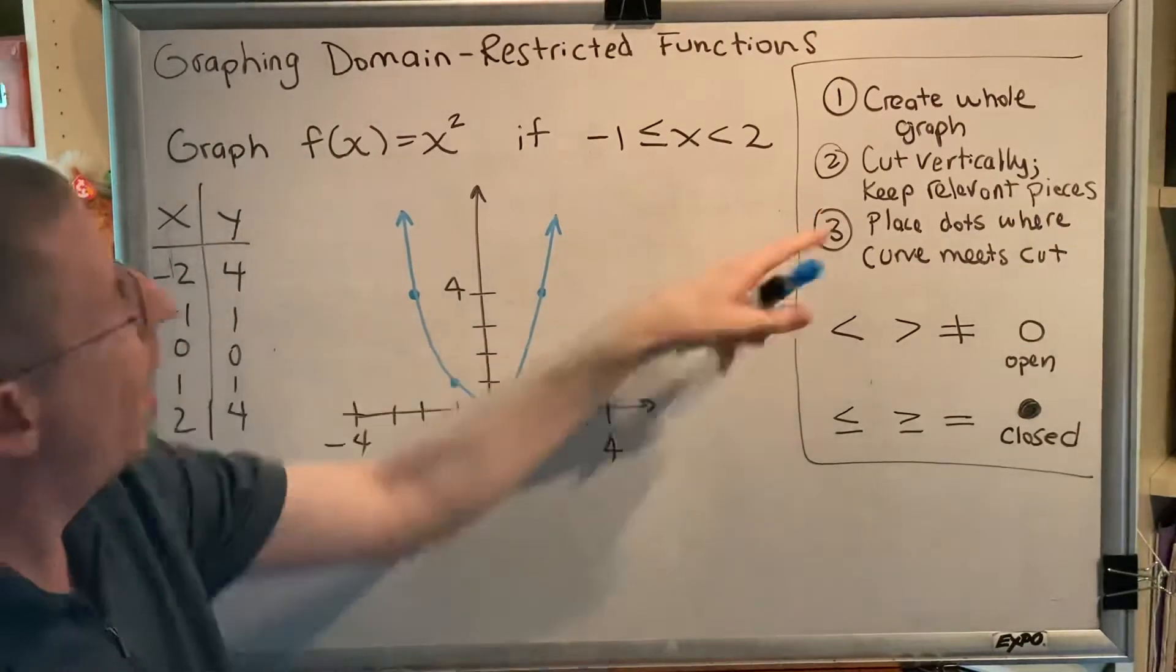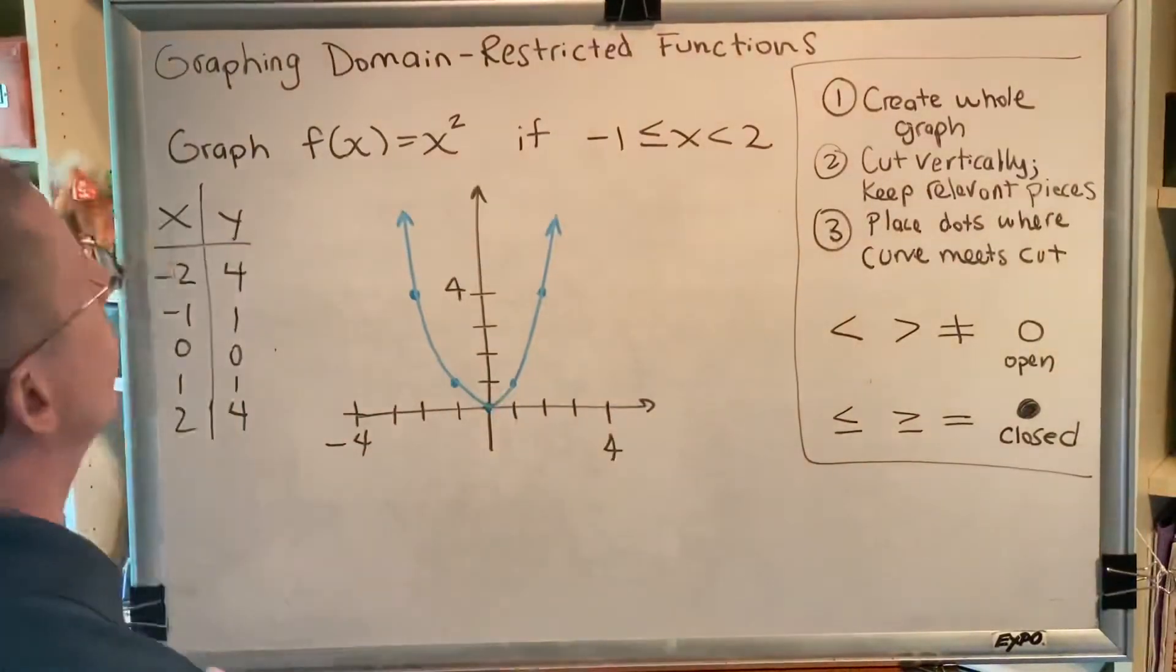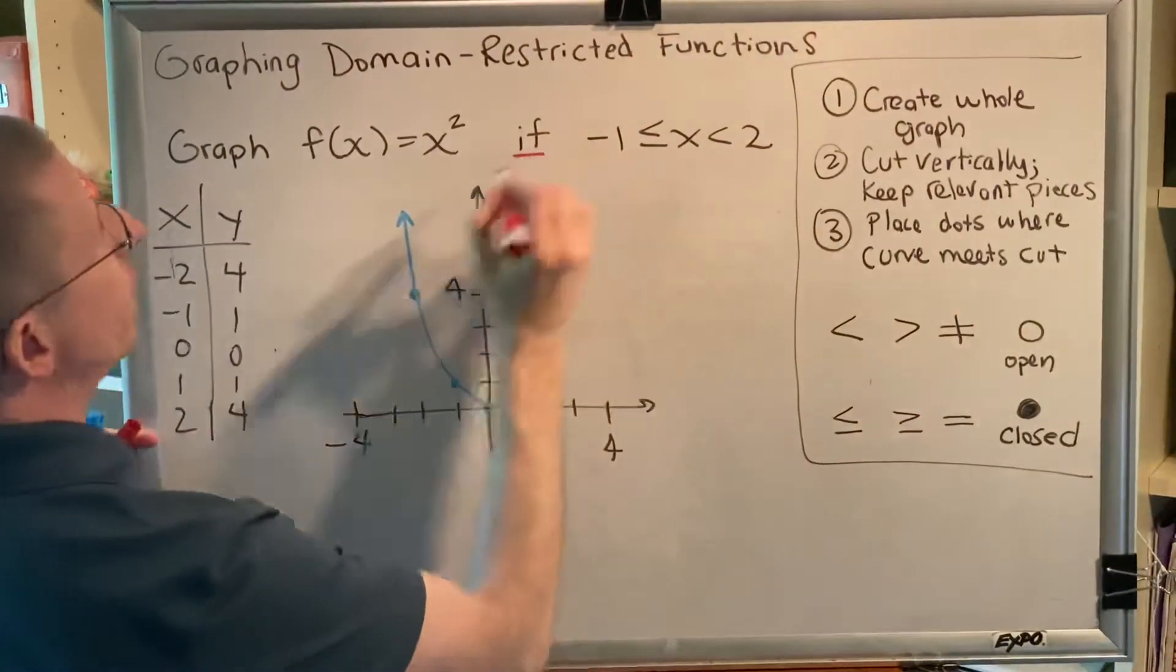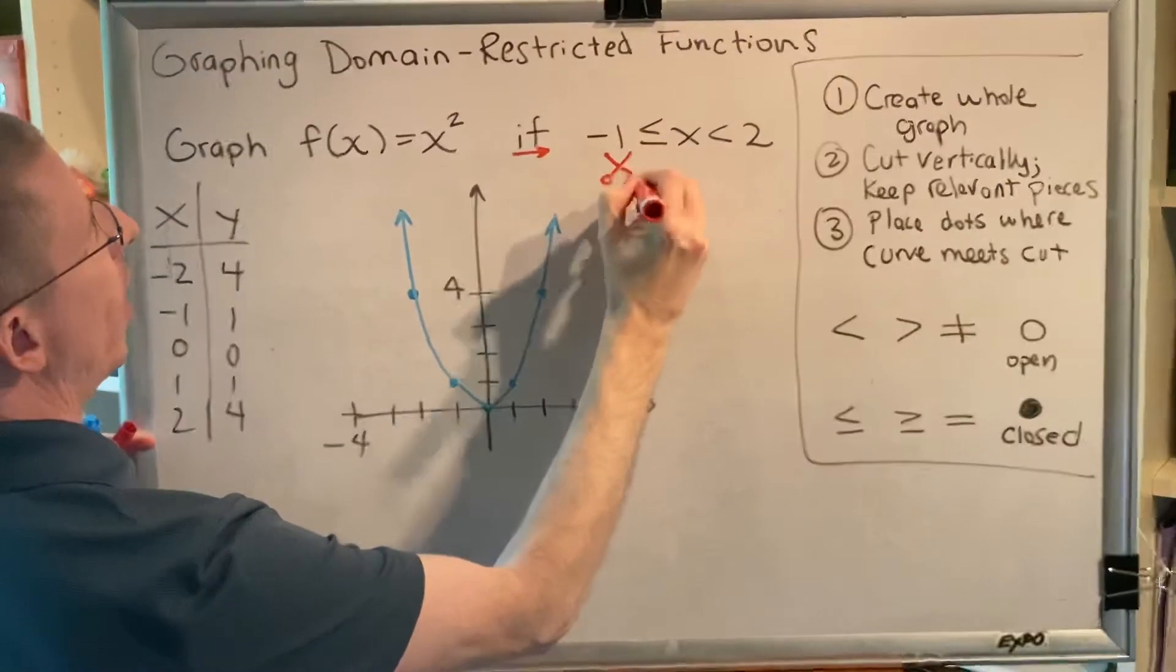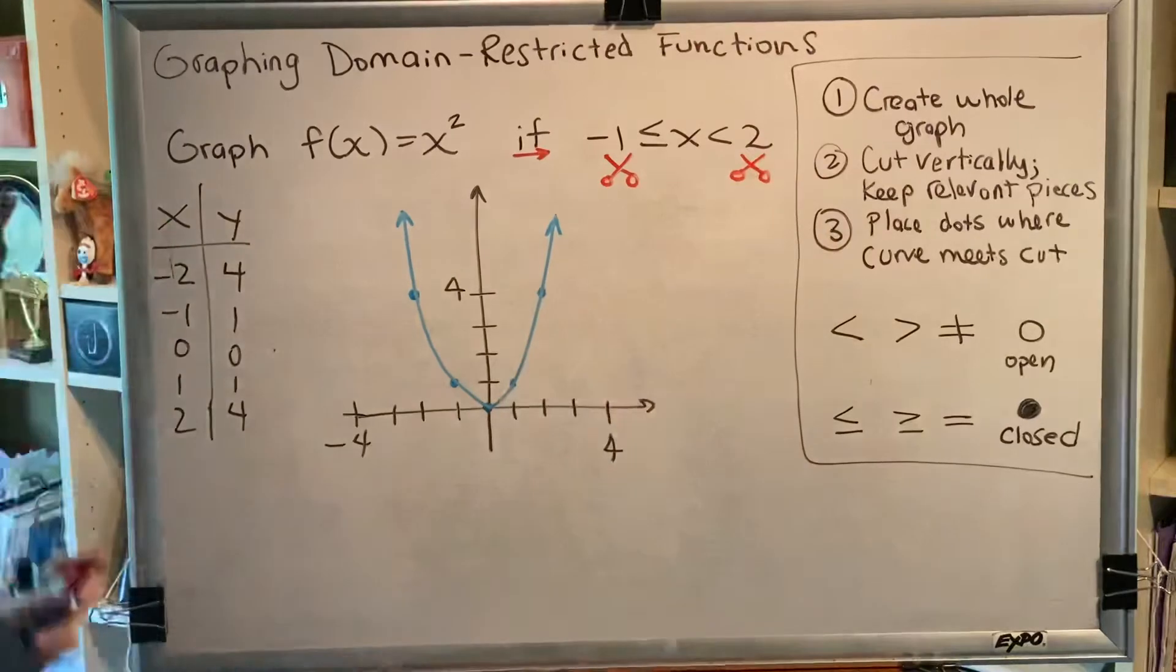Step 2, cut vertically. Alright, where do we cut? Well, we look after the word if, and then we get out our scissors. And we cut at any number that we see after the word if.